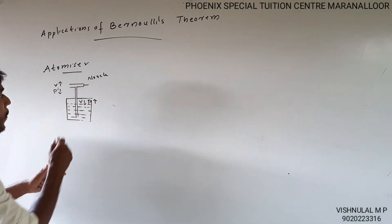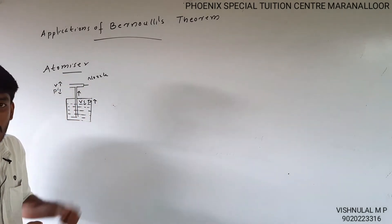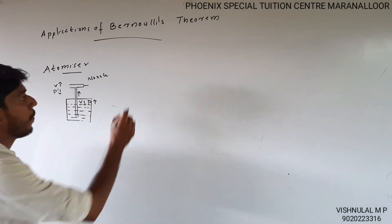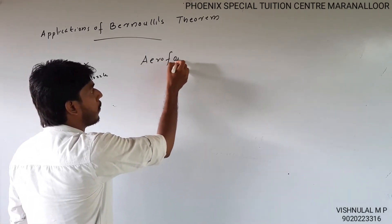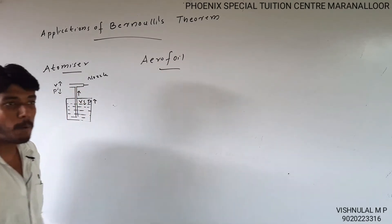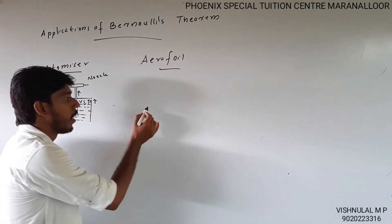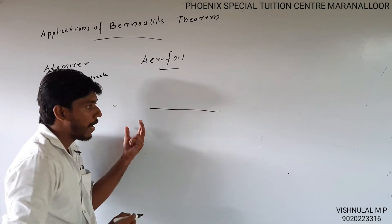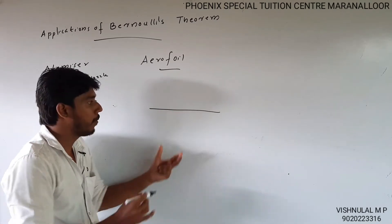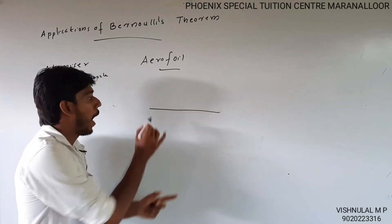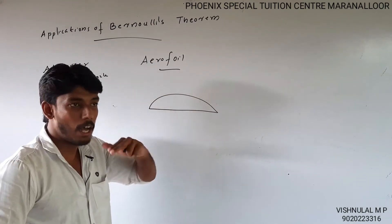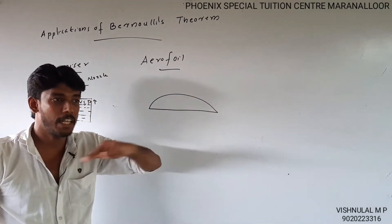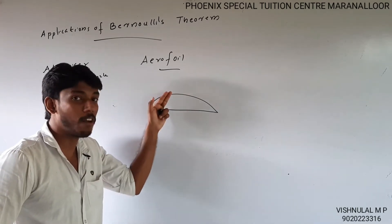Second application: Aerofoil. The airplane has wings. It has a unique shape. The bottom, the lower part, is straight. The upper part is curved. The lower part is flat and the upper part is curved.